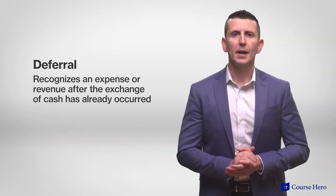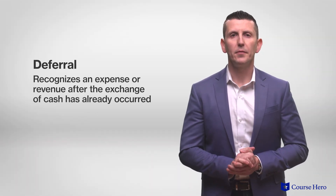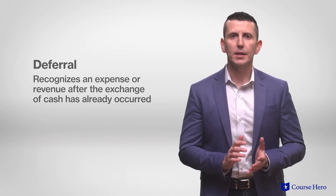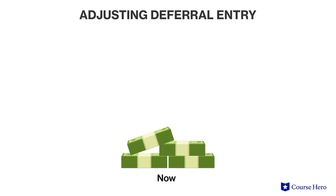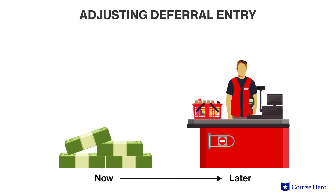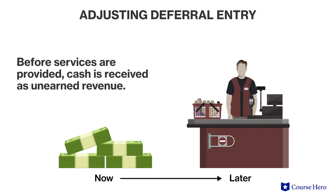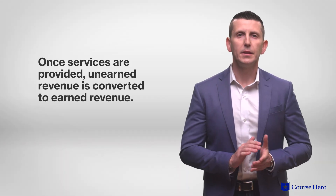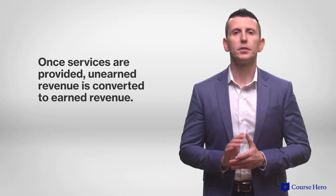Deferral entries recognize an expense or revenue after the exchange of cash has already occurred. An example of an adjusting deferral entry is the conversion of unearned revenue to earned revenue. In the case of unearned revenue, cash is received before services are provided. Until services are provided, the corresponding journal entry is to unearned revenue, a liability. Once services are provided, the unearned revenue is converted to earned revenue.